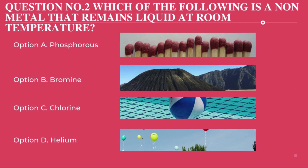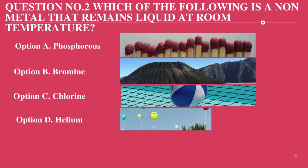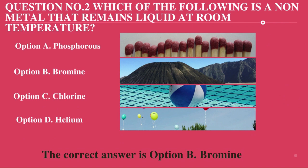Question number 2. Which of the following is a non-metal that remains liquid at room temperature? A. Phosphorus. B. Bromine. C. Chlorine. D. Helium. The correct answer is option B. Bromine.